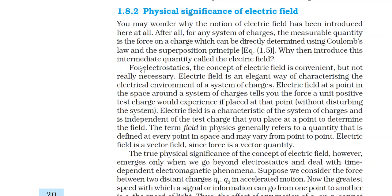After all, for any system of charges the measurable quantity is the force on a charge, which can be directly determined using Coulomb's law and the superposition principle. Why then introduce this intermediate quantity called the electric field? We are saying that in any system of charges, force is a measurable quantity, and Coulomb's law can be easily calculated. So the electric field is convenient, but not really necessary.